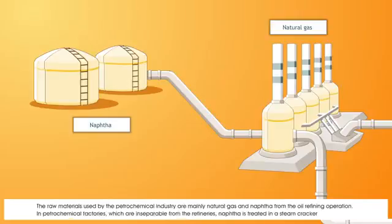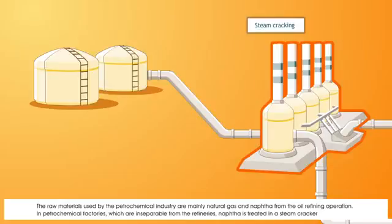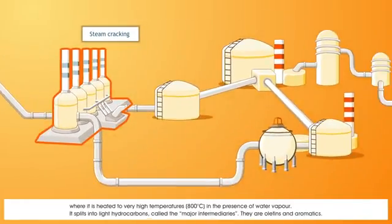The raw materials used by the petrochemical industry are mainly natural gas and naphtha from the oil refining operation. In petrochemical factories, which are inseparable from the refineries, naphtha is treated in a steam cracker, where it's heated to a very high temperature of 800 degrees Celsius in the presence of water vapour.